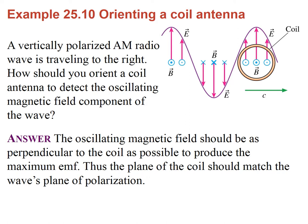To detect an oscillating magnetic field with a coil antenna, the field goes out and then reverses and comes in as a function of time. The coil must be perpendicular to the magnetic field in order to have a changing flux and thus detect the signal.